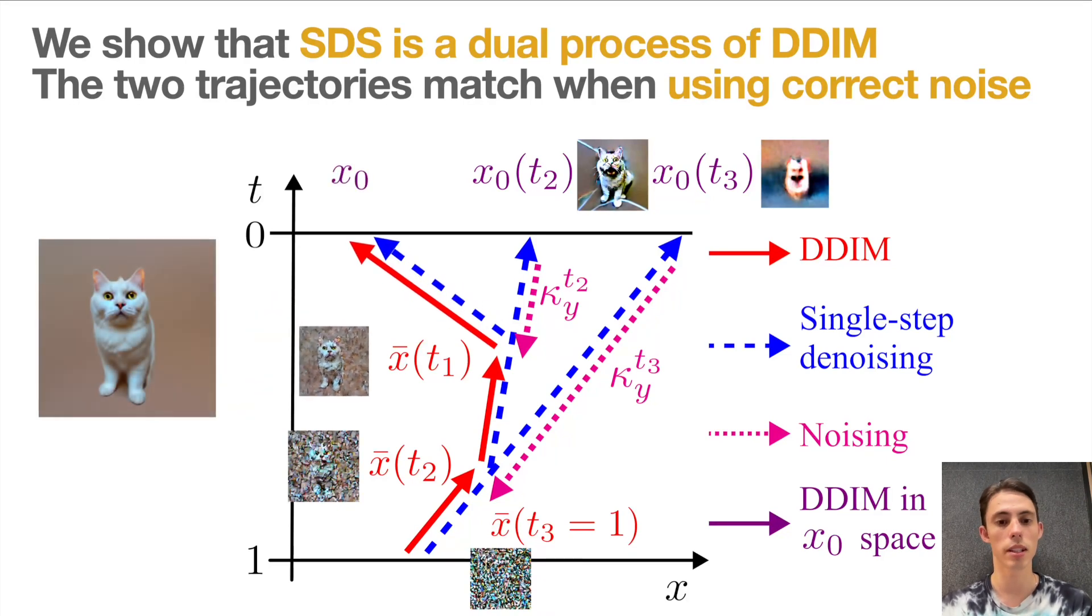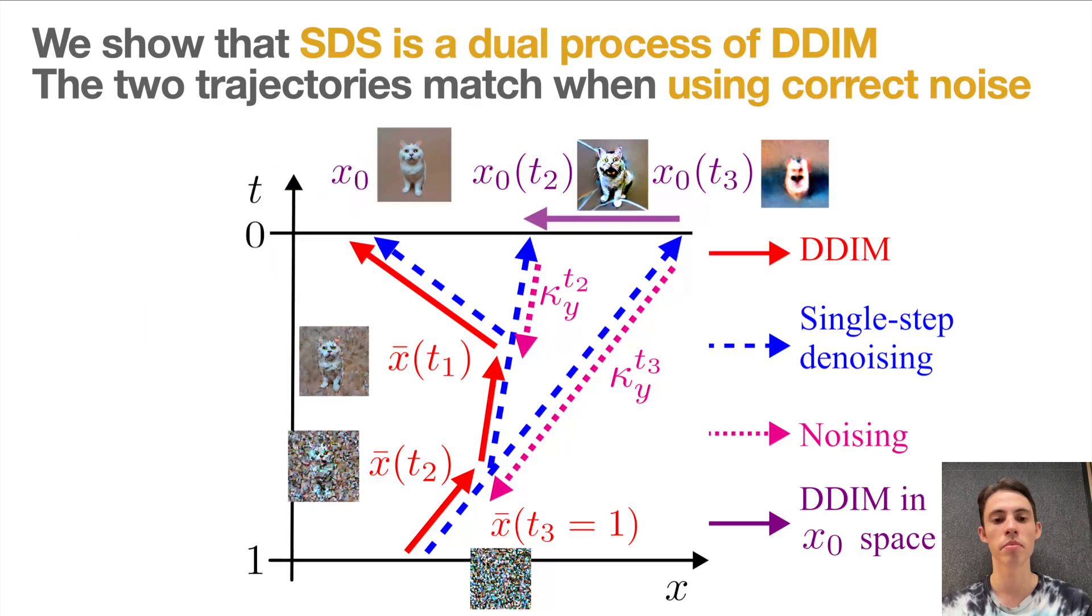In our work, we notice that in parallel with DDIM, there is a dual process happening in the space of x_0 of t, space of single-step denoised images. While DDIM evolves images from noisy to noise-free images, the dual process is defined completely on noise-free images, from blurry to sharp and good-looking.